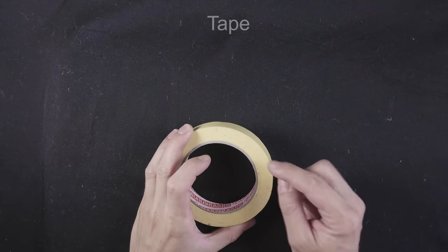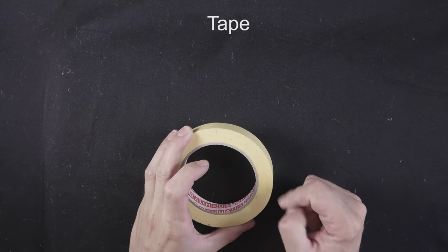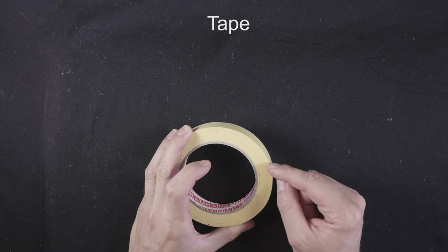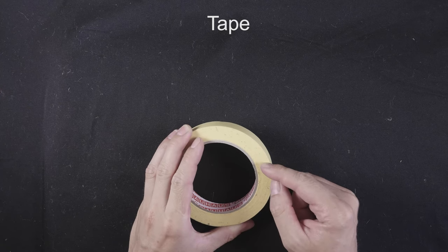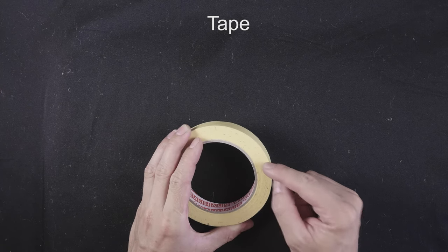Besides the rope, a bit of tape is quite handy for securing the ends of your rope. This is going to prevent them from fraying or unraveling.